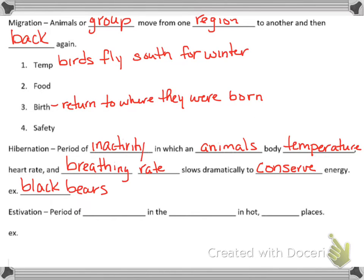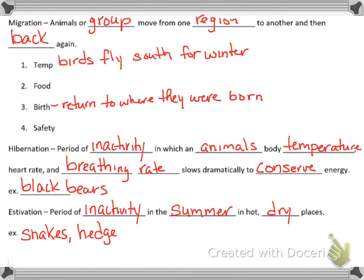Another period is called estivation. Estivation is like the opposite of hibernation — it's a period of inactivity in the summer months when it is hot and dry. Snakes, hedgehogs, and desert tortoises do this; they go into estivation so they can stay cool and not be affected by the extreme heat.